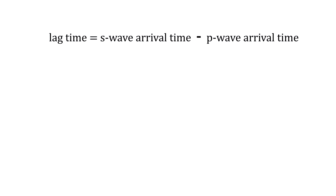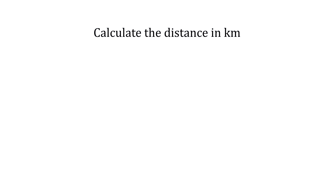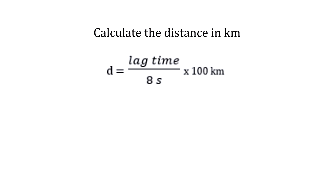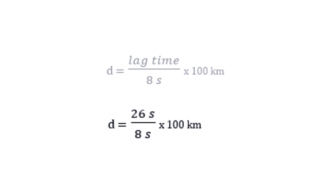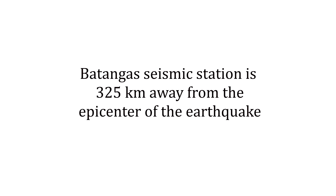To get the lag time, we take the difference between the S wave arrival time and the P wave arrival time. For Batangas, lag time equals 34 seconds minus 8 seconds, giving 26 seconds. To calculate the distance in kilometers, we use the equation: distance equals lag time divided by 8 seconds, times 100 kilometers. So we have 26 seconds divided by 8 seconds times 100 kilometers, which gives 325 kilometers. Batangas seismic station is 325 kilometers from the epicenter.